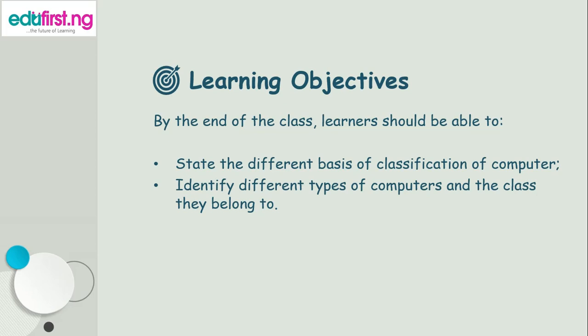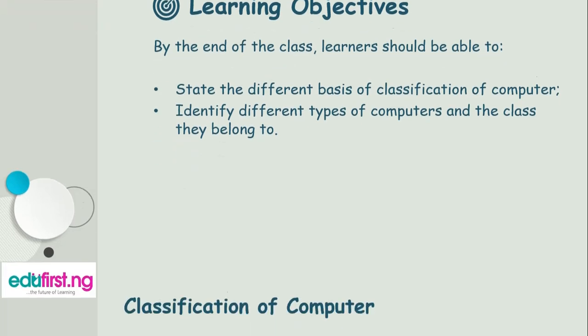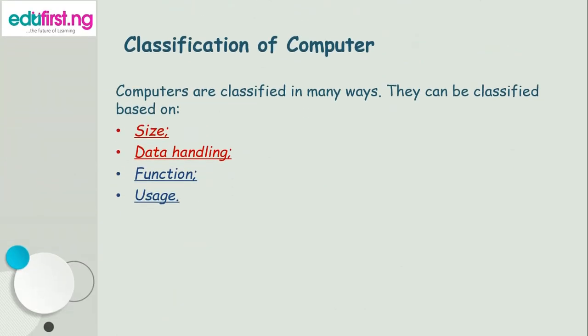But before we go into all that, I believe that in our previous classes on ICT, we have been taught that a computer is any device that can accept data, process data, store data, and give out an output in the form of information. We also learnt that there are different types and classes of computer, and it is these different types and classes that we want to discuss today.